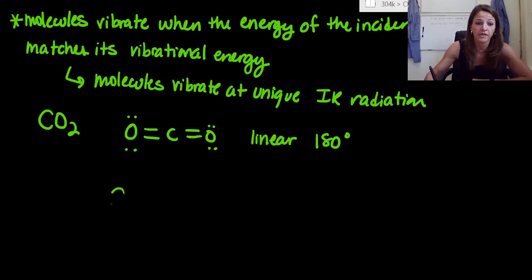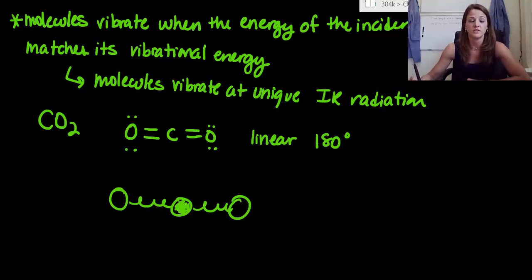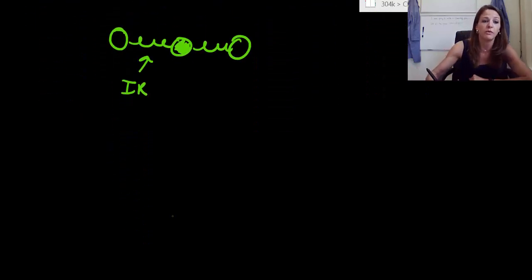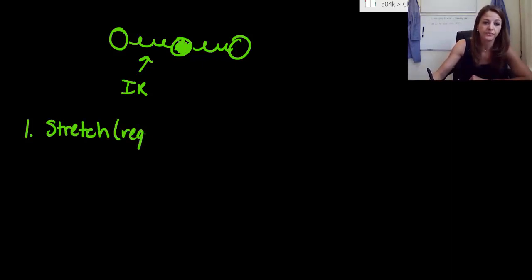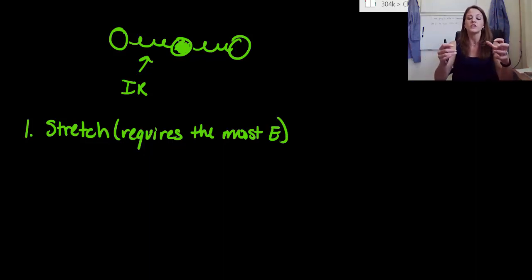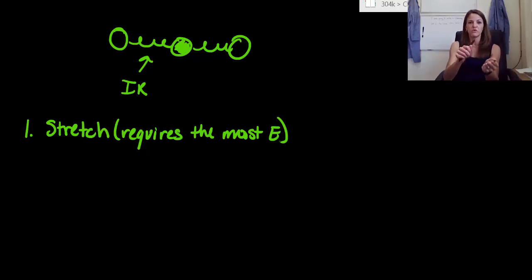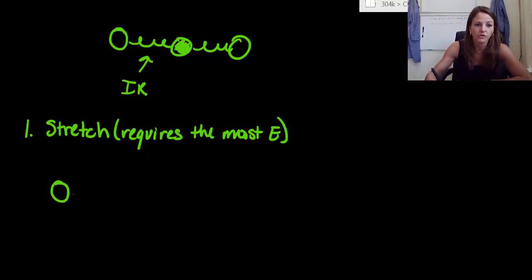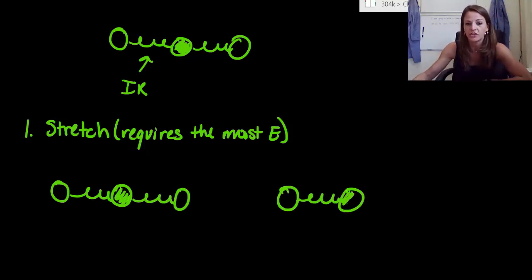Now we want to talk about what happens when IR radiation hits this molecule. I'm using the ball and spring model — my carbon is in the center, and the oxygens are on the outside. Two main things can happen: you're either going to stretch or going to bend. Stretching requires the most energy. Think about holding a slinky — it takes the most energy to pull that spring apart, whereas if you just bend it and move it around a little bit, it does not take much energy at all. There are two different versions of stretches we can do for CO2.